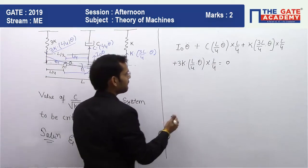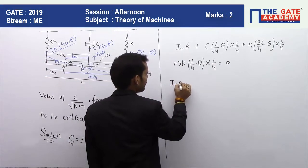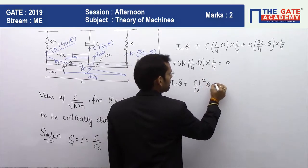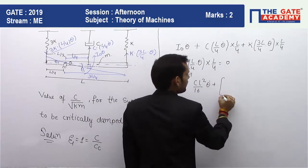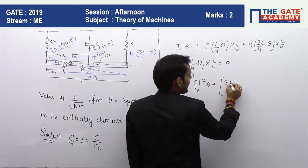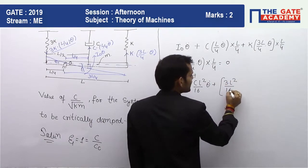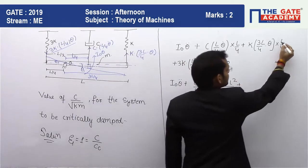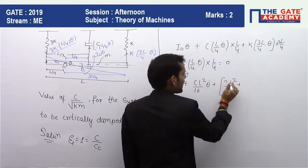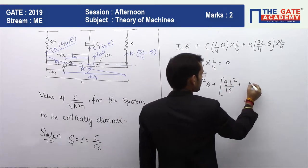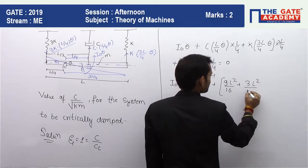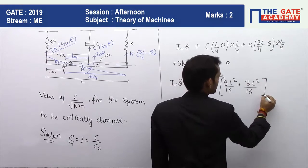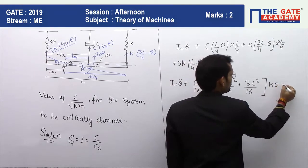Simplifying the equation: I-naught θ̈ plus CL²/16 θ̇ plus, combining the spring stiffness terms — 9kL²/16 plus 3kL²/16 equals 12kL²/16 — times k times theta equals zero. So the simplified equation of motion is: I-naught θ̈ + (CL²/16)θ̇ + (12kL²/16)θ = 0.